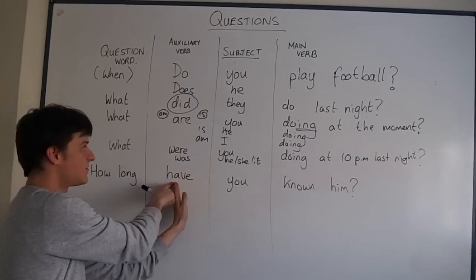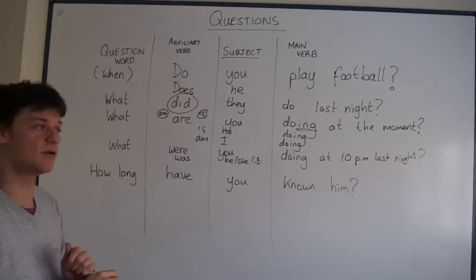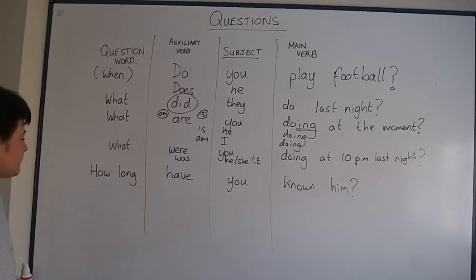And please remember, have the auxiliary verb before you. Not how long you have known him. How long have you known him? How long have you known him?